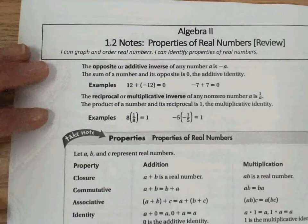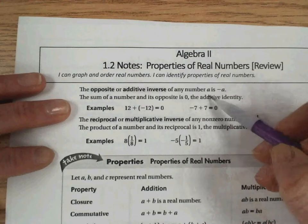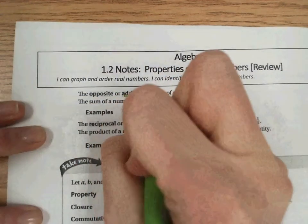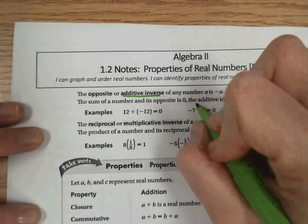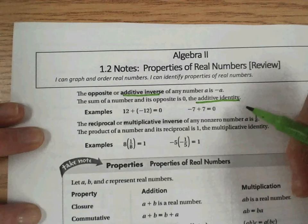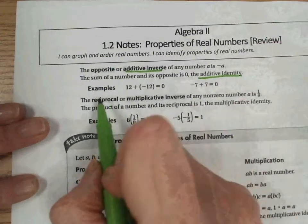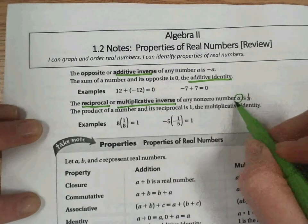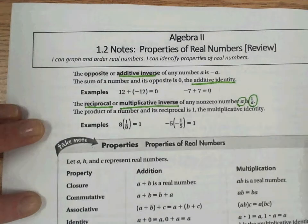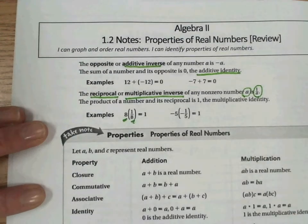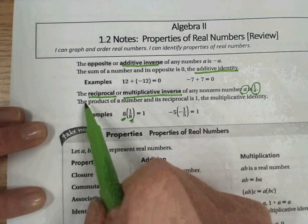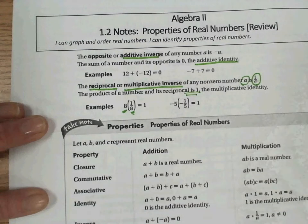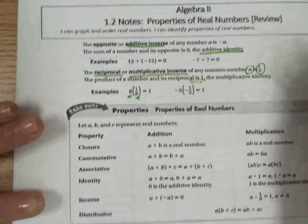And our last page. Here we have our different properties for real numbers, starting with the opposite or additive inverse of any number a is negative a. So that's our phrase additive inverse we should be familiar with. The sum of a number and its opposite is 0. So the additive identity would be adding two numbers together and getting 0. Next we talk about the terms reciprocal, or also known as the multiplicative inverse. Of any non-zero number, a is 1 over a. So for example, we can see that 8 and 1 eighth are multiplicative inverses, or reciprocals. And we also know that the product of a number and its reciprocal is always 1. And that comes in handy. These all come in handy as we're solving algebraic expressions.